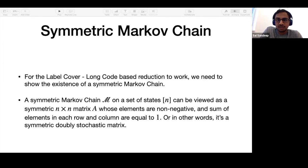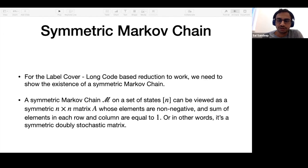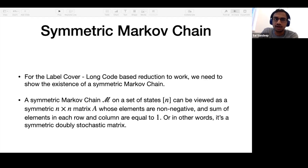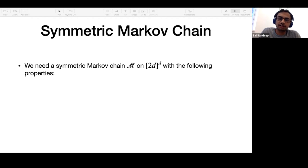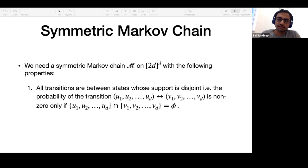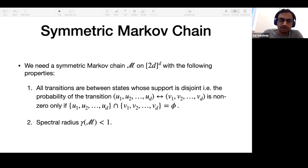Before going further, let us recall what a symmetric Markov chain is. You have a state space and the probability of going from state i to state j equals the probability of going from j to i. You can think of it as an N-by-N symmetric matrix with non-negative entries and row and column sums equal to one — a symmetric doubly stochastic matrix. For the reduction to work, we need two properties: the support is disjoint, and the spectral radius is less than one.